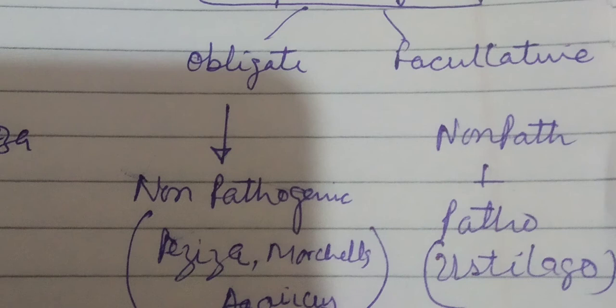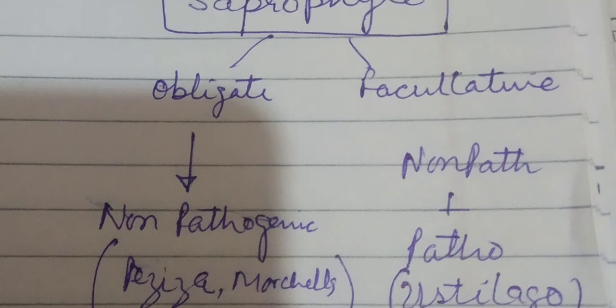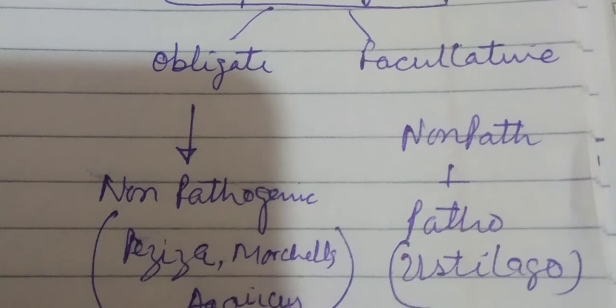Obligate saprophytes do not affect the living parts of plants or animals. Facultative saprophytes are those which pass their life as saprophytes, but when they enter a host or living organism, they can also create symptoms and survive in the living tissues. For example, Ustilago fungi — Ustilago is a pathogenic facultative saprophyte; it is pathogenic and affects the seeds of the host.